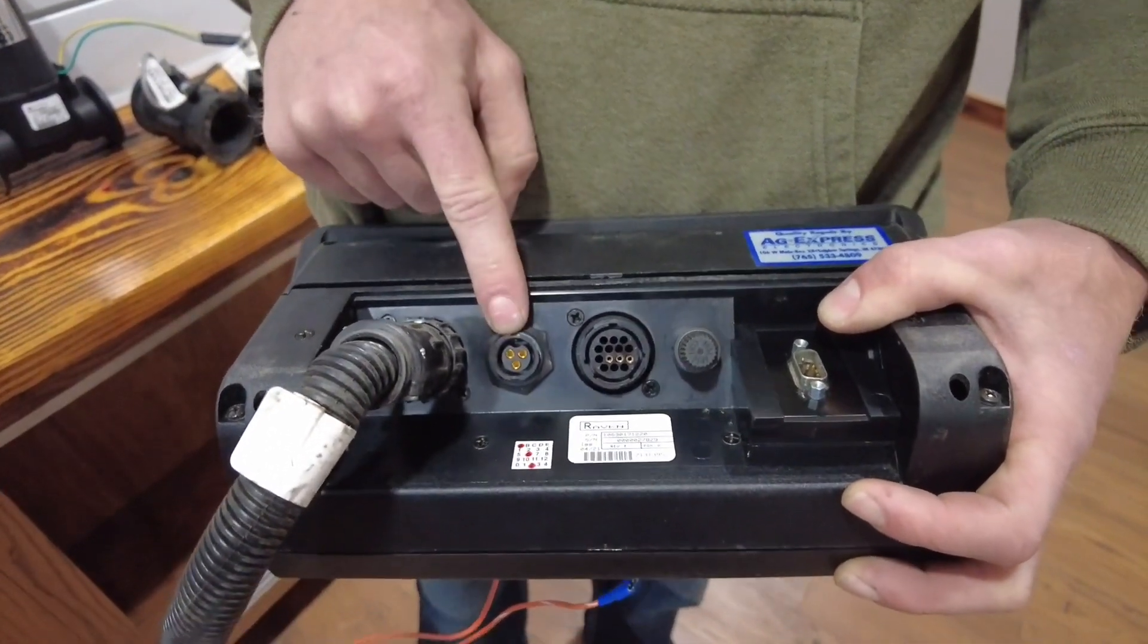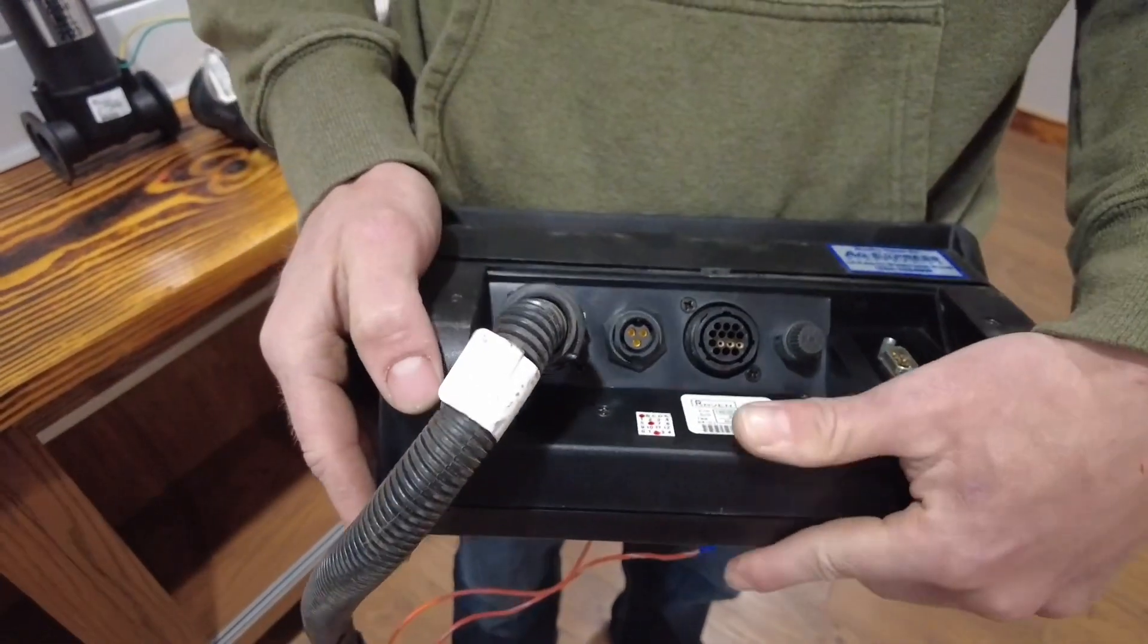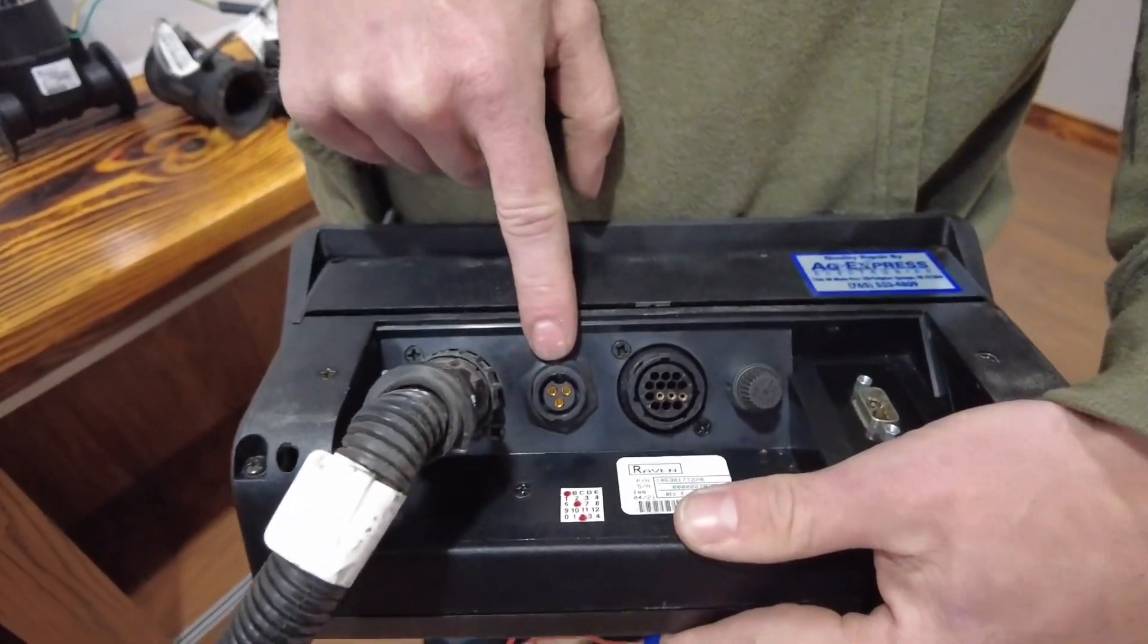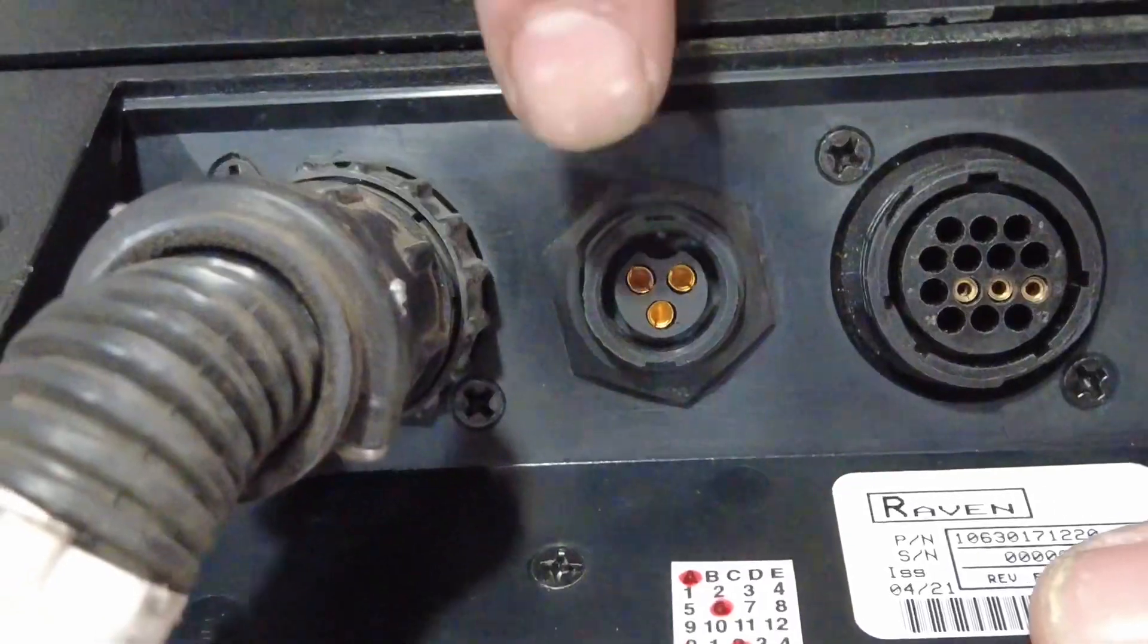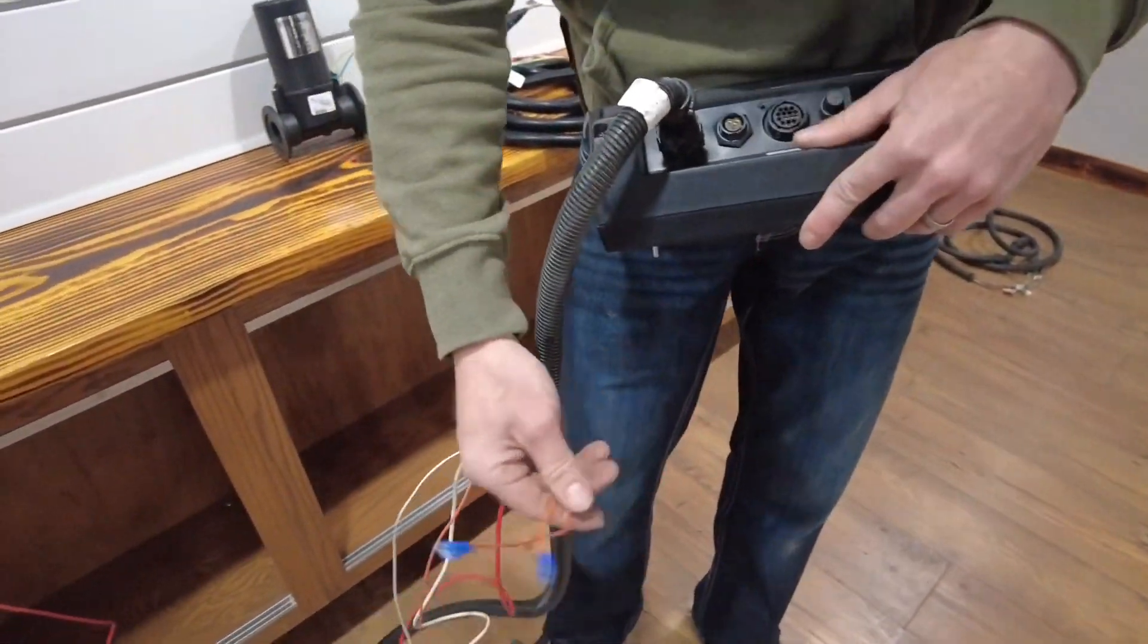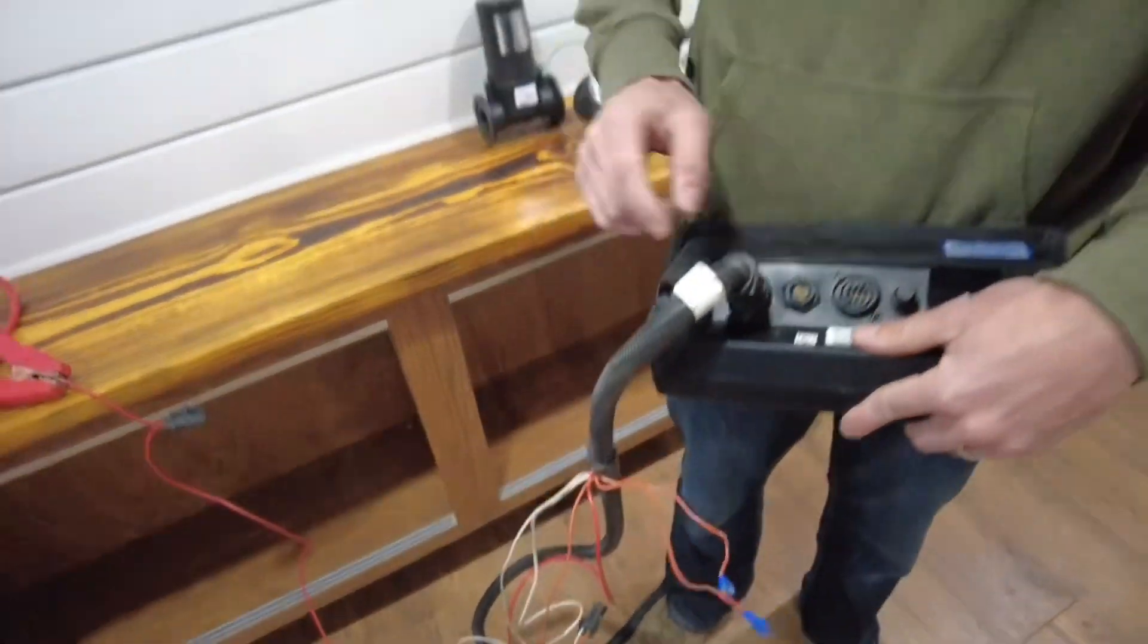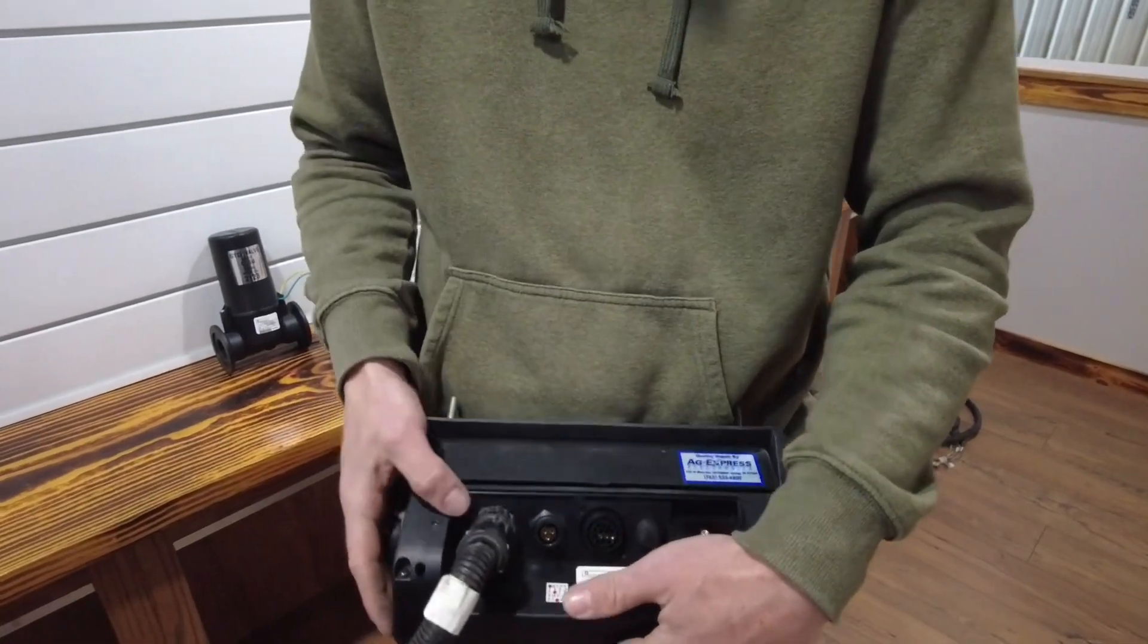This is your speed input. It's a three pin. It'll thread right into there. Now I'm going to tell you something right now about that speed input. That does not provide power. If you need power, you're going to have to get it out of one of these two wires right here or somewhere else. This does not provide power to your speed input.